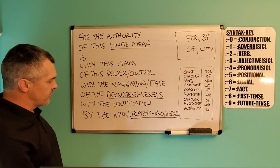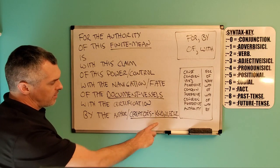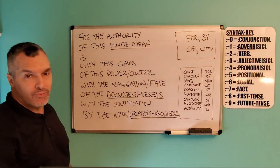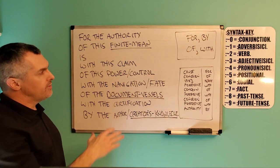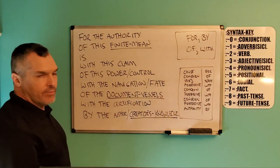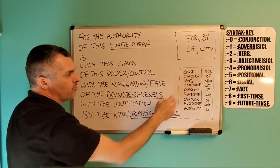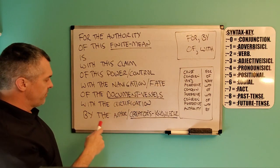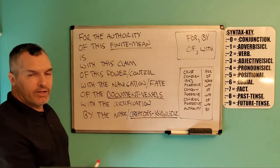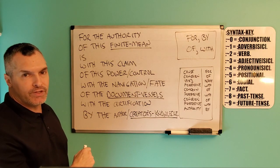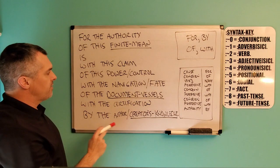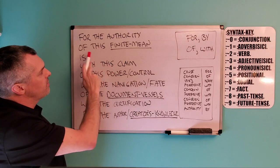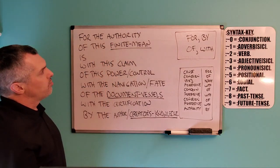Now to go backwards — this becomes the cause. By switches out with for, and of switches out with with. You will always have a cause and a concern and then a verb. You would never have more than two positional lodial effect phrases in front of the verb. So going by those rules: 'for the author and creator's knowledge of the certification is with the document vessels of the navigation and fate, with this power and control of this claim, with this finite mean, by the authority.'